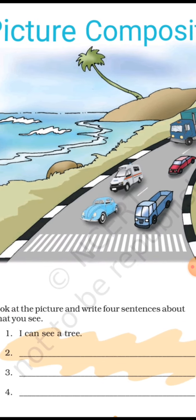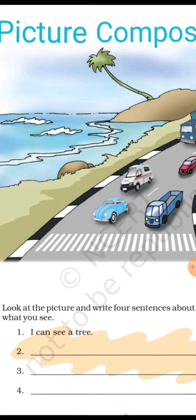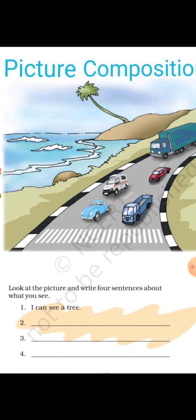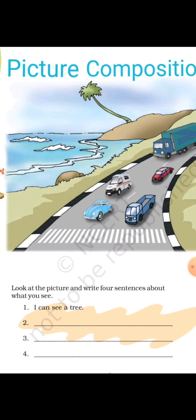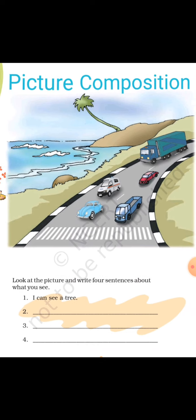Look at the picture and write four sentences about what you see. In your book chapter, there is a page with vehicles moving and a seashore. This is the part of picture composition. So, first observe the picture, then collect the words in your mind, and then complete four or five lines — the given lines according to the picture. Whatever things you write — one, two, three, four or five points — that will be known as picture composition.